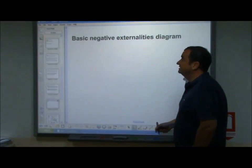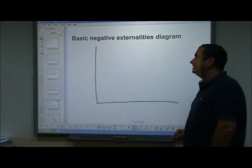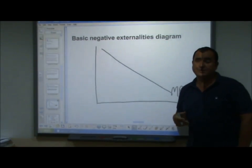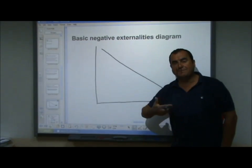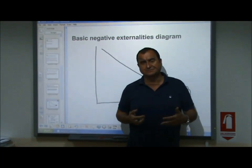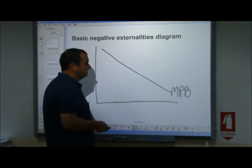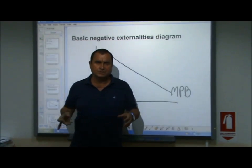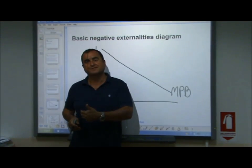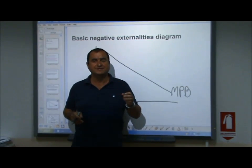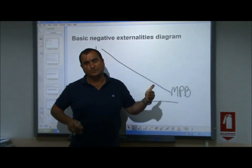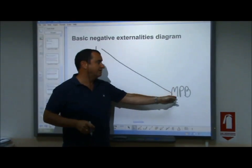We identify that there are marginal private benefits, and these are decreasing. The extra benefit — 'marginal' means extra — enjoyed from having yet another one of these items will be lower than the benefit achieved from the previous item. A good example: if you're very thirsty, the first glass of water gives you a lot of benefit; the second gives some benefit but not as much; the third gives a little, but less than the second. So the extra benefit is always less than the benefit of the unit previously consumed — that's falling marginal private benefits.